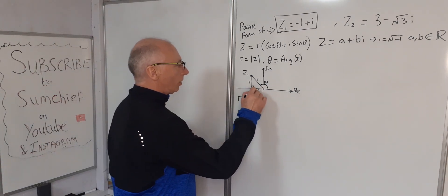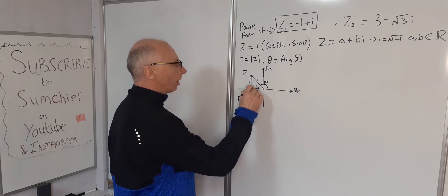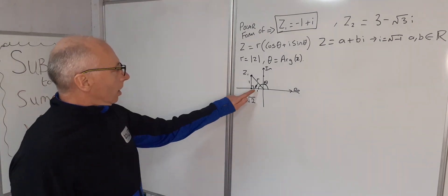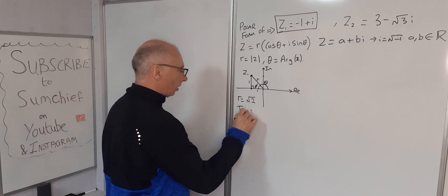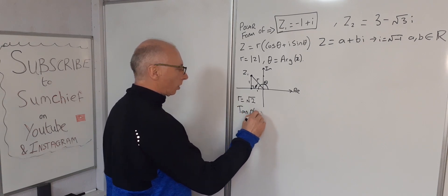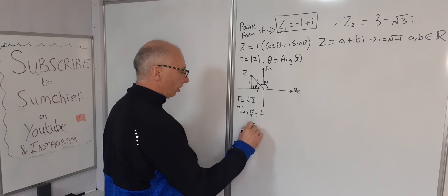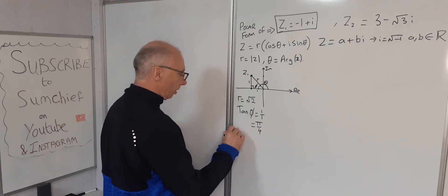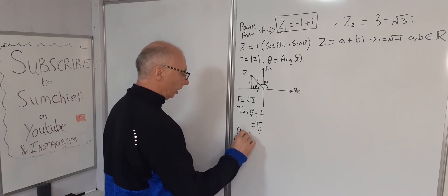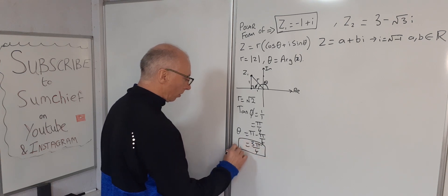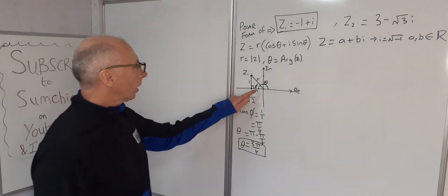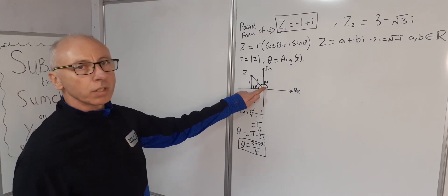Now we need to find the angle θ. If we find this angle and subtract from π, let's call that angle φ. Going back to SOHCAHTOA, tan φ = 1/1 = 1, which equals π/4. Therefore, θ = π - π/4 = 3π/4. That's our angle θ.